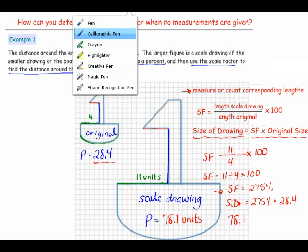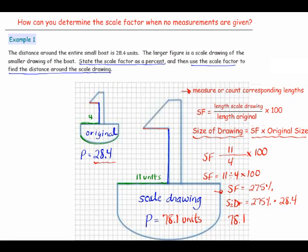In this problem, we were given the perimeter of the figure and asked to find the perimeter of the second figure. Our first step was to measure or count corresponding lengths. Our second step was to calculate the scale factor — the length in the scale drawing divided by the length of the original, multiplied by 100. Once you know the scale factor, multiply it by the original size to get the size of the drawing.